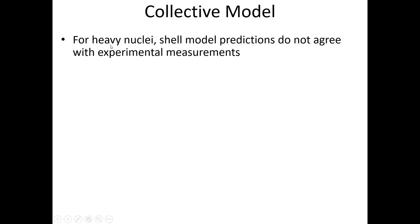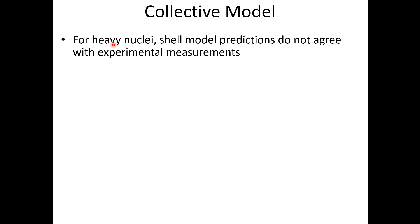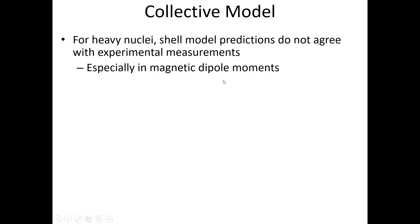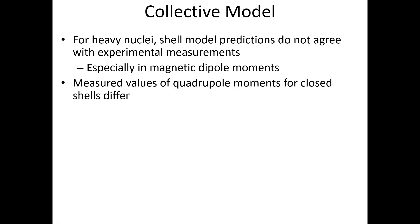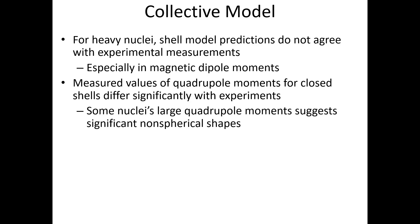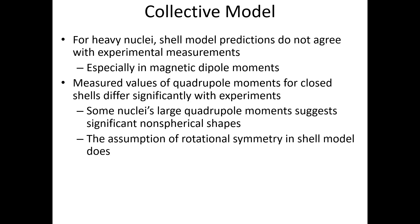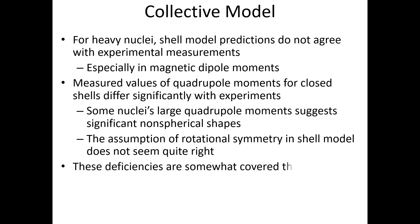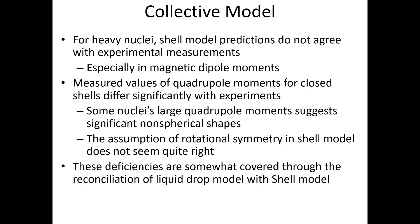You know that for applying the shell model, predictions do not agree with the experimental measurements. This is especially in the magnetic dipole moment. We found during the discussion of the shell model that the measured value of the quadrupole moments for the closed shells differ significantly from experiments — larger quadrupole moments suggest a significant non-spherical shape. Additionally, the assumption of rotational symmetry in the shell model does not seem quite right.